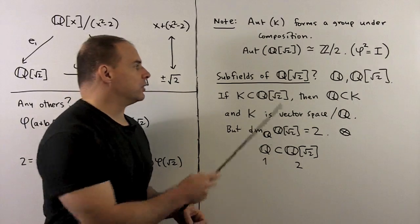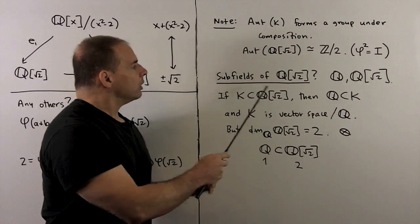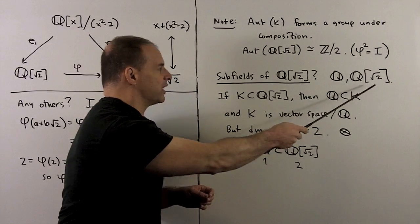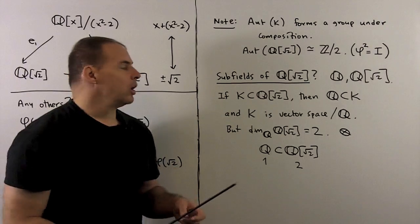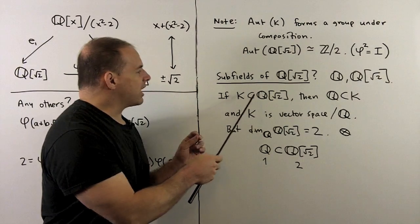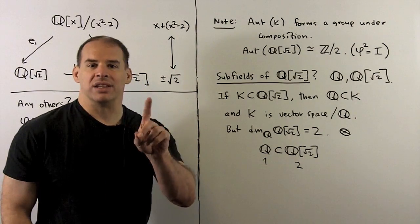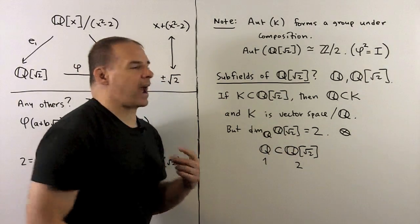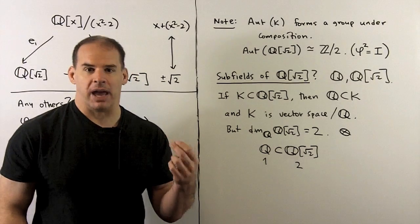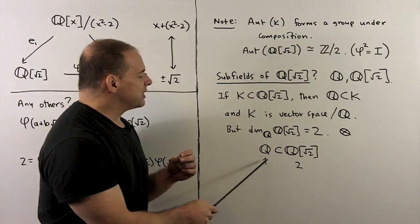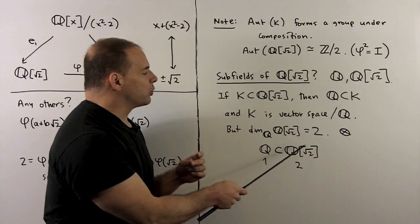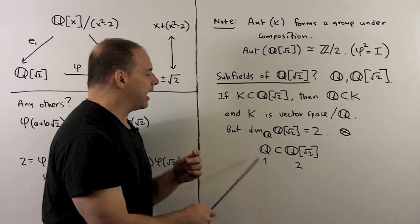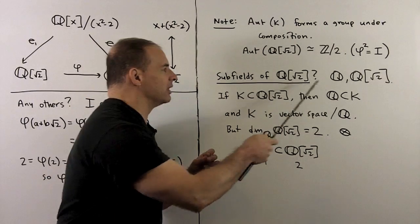How about subfields of Q(√2)? By observation we have the rationals and Q(√2) itself. If we look for a k inside Q(√2), since 1 is in there it contains the rationals, meaning k is a vector space over the rationals. Checking dimensions: the rationals take up dimension 1, Q(√2) takes up dimension 2 — there's no room in between for k. So we only have two subfields in this case.